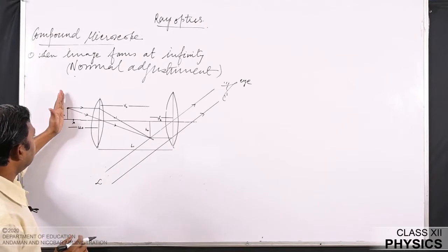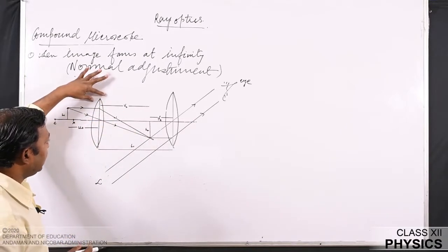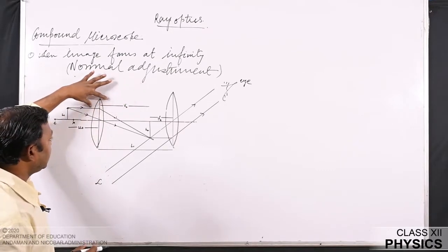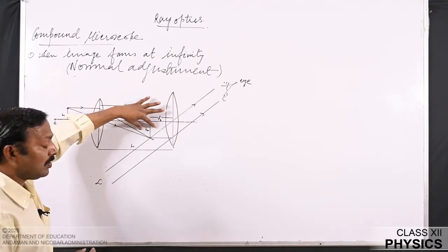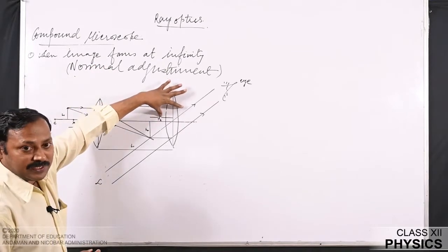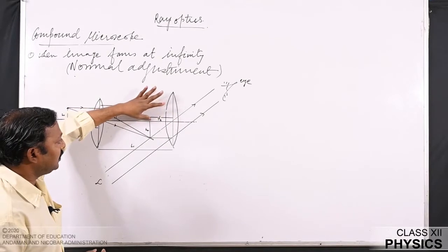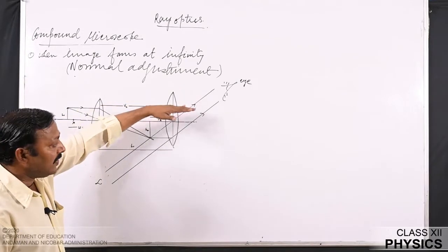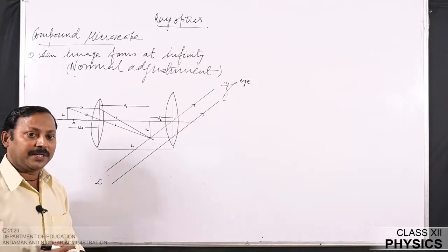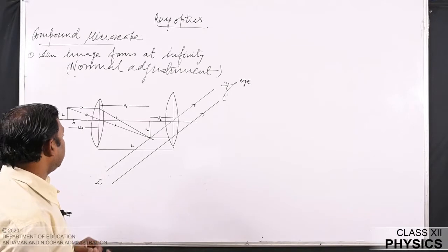An object is placed between the focus and the center of the objective lens. This object forms an image by the objective at a distance v₀ from the objective lens, and this image formed by the first lens acts as an object for the second lens. If this image falls on the focus point of the second lens, then the final image will form at infinity. Now we will find the magnification produced by this system.